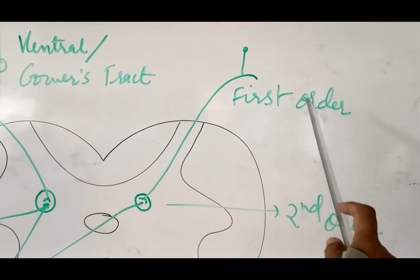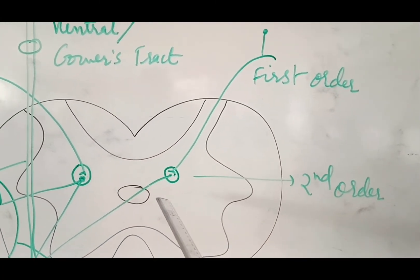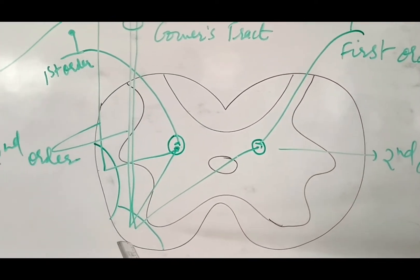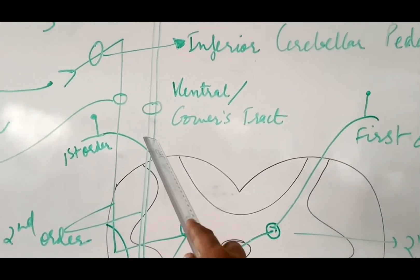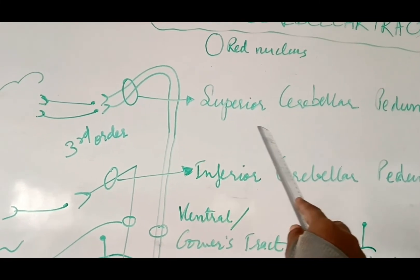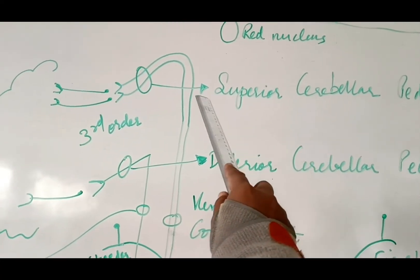So now this is the ventral spinocerebellar tract. As you can see, the first order of neuron started from dorsal root ganglion. It has both crossed and uncrossed fibers. The crossed ones ascend upwards and reach the superior cerebellar peduncle. This is known as the ventral or Gower's tract.